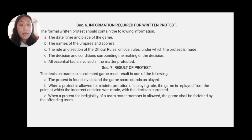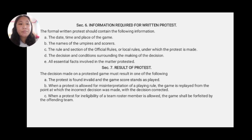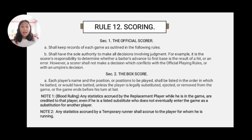Section 7: the result of the protest. The decision made on a protested game must result in one of the following: the protest is found invalid and the game's score stands as played; when the protest is allowed for misinterpretation of a playing rule, the game is replayed from the point at which the incorrect decision was made with the decision corrected; or when the protest of ineligibility of a team roster member is allowed, the game shall be forfeited by the offending team.